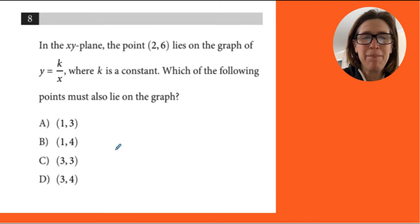Really great question. So it says, in the xy plane, the point (2, 6) lies on the graph of y equals k over x, where k is a constant.